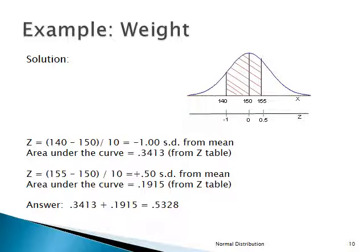We add the two pieces: 0.3413 + 0.1915 = 0.5328. So roughly 53.28% of adult men will weigh between 140 and 155 pounds. In other words, the probability that a randomly selected adult man weighs between 140 and 155 pounds is 0.5328.